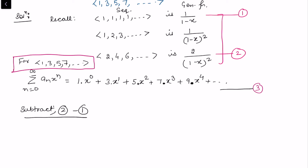The generating function for sequence 2 (evens) expanded is: 2 (constant term), 4x, 6x², 8x³, and so on — these are the even terms.